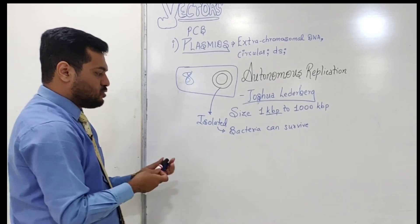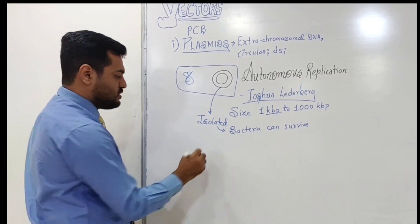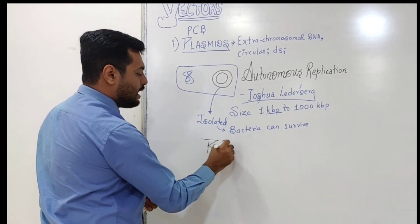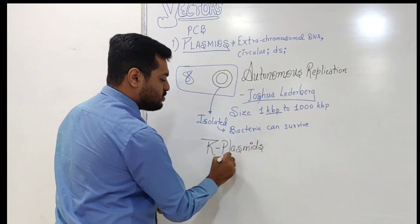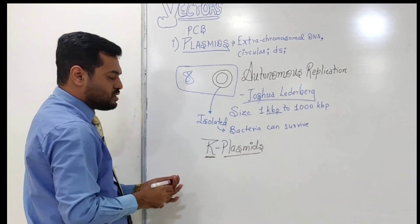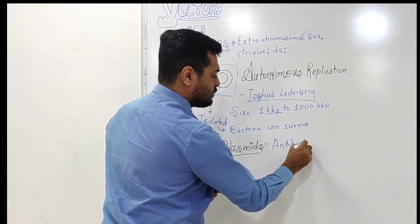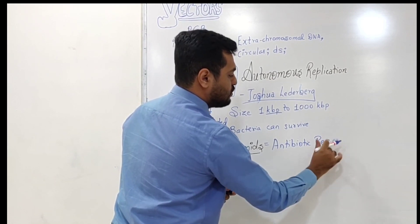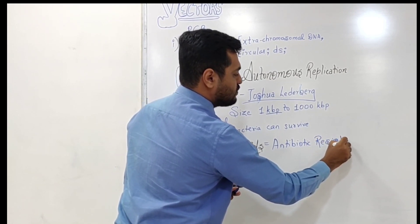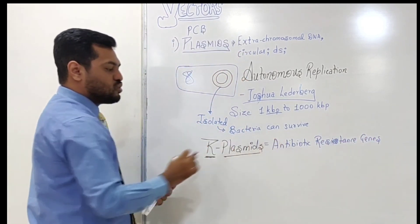However, some bacteria have plasmids that help in survival during unfavorable conditions. These are called R plasmids because they have genes that provide resistance against certain antibiotics. These are antibiotic resistance genes.